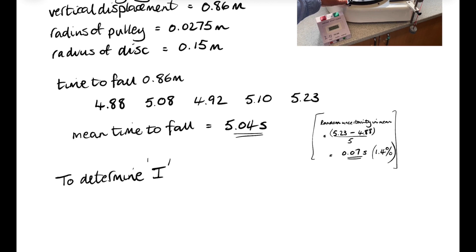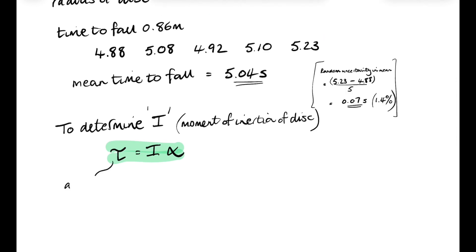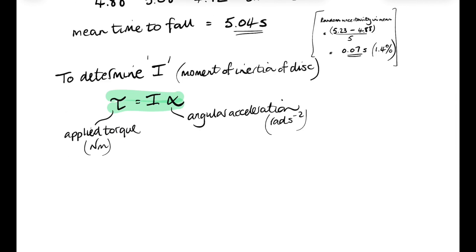Now, if we want to determine the moment of inertia of the rotating disk, we're going to use the relationship tau equals I alpha, where tau is the applied torque in newton meters and alpha is the angular acceleration in radians per second squared. Now, we are going to assume here that the torque is going to be provided by the weight of the falling mass times the radius of the pulley that the string was wound on.